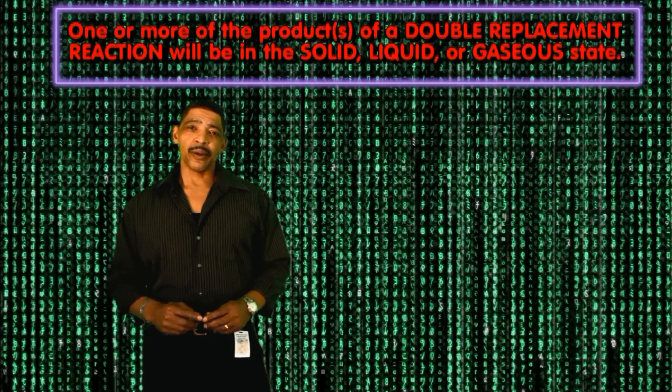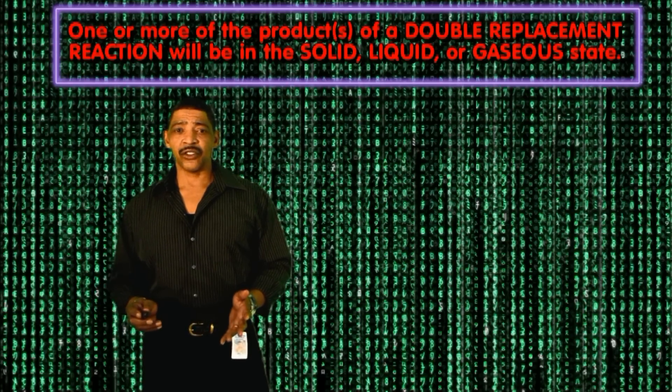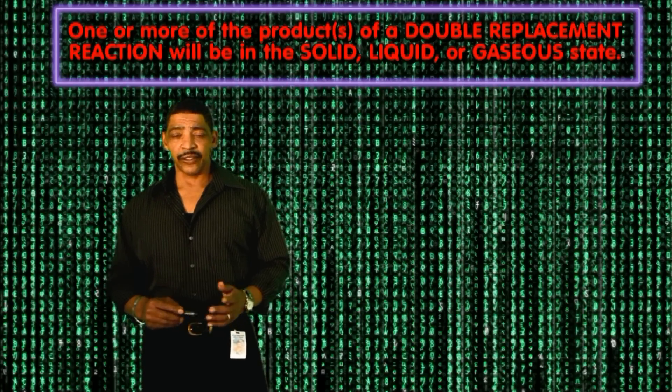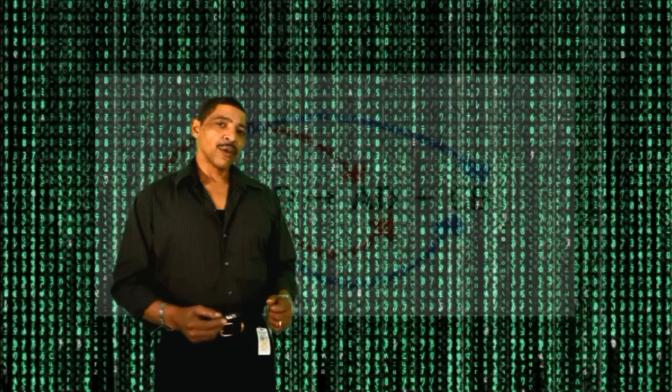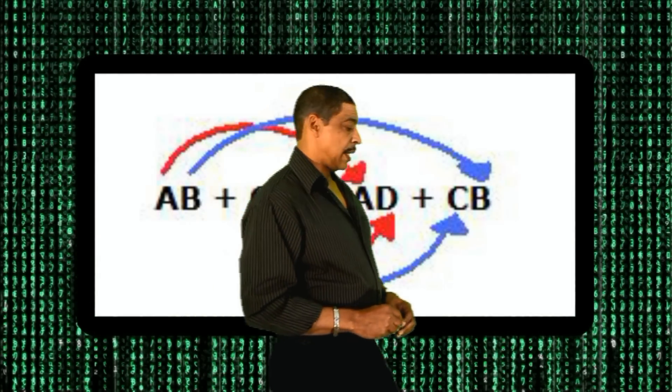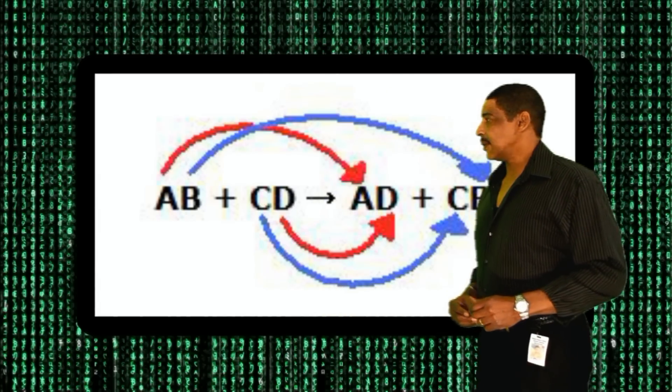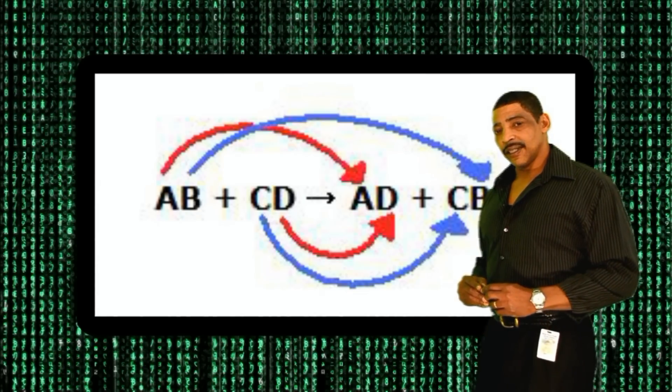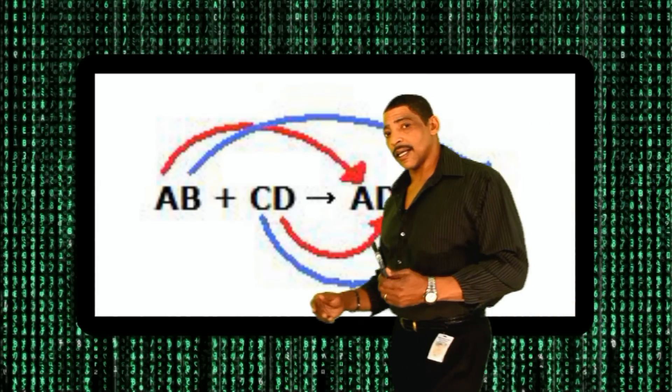In a double replacement reaction, reactants will exchange ions or elements to form products. At least one of the products will either separate from the reaction mixture, usually in the form of a solid or a gas, or it will form a stable covalent compound. Most double replacement reactions will follow the same general equation where compound AB reacts with compound CD to form the products compound AD and compound CB.